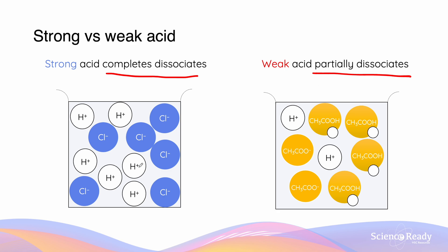We can see that HCl has completely split up into its H⁺ and Cl⁻ components, whereas with acetic acid, only some of the molecules have split up into H⁺ and acetate.